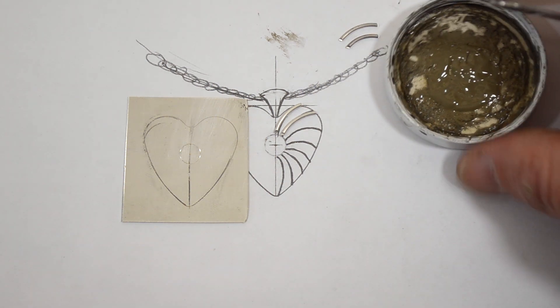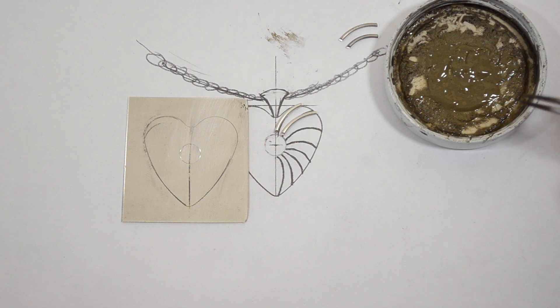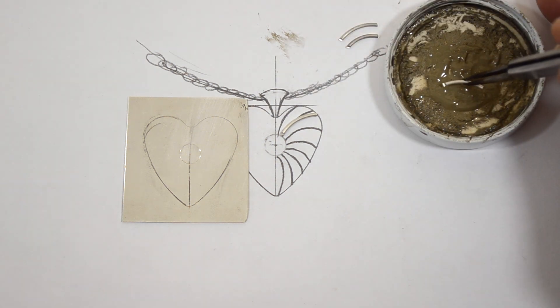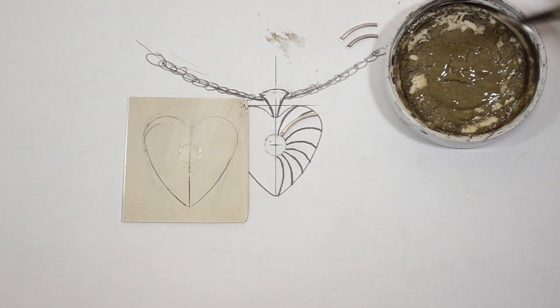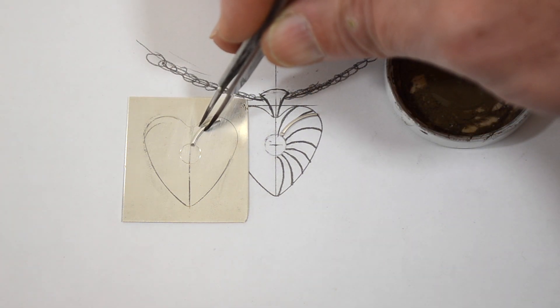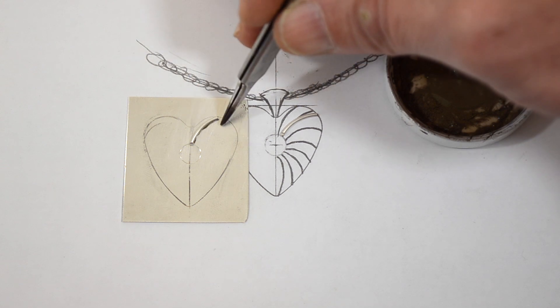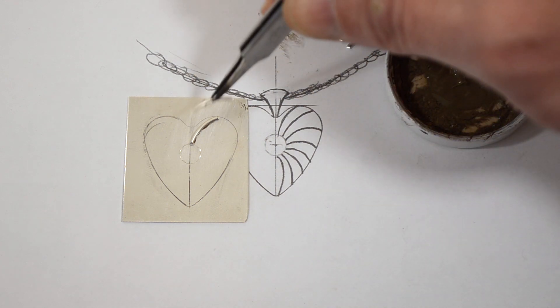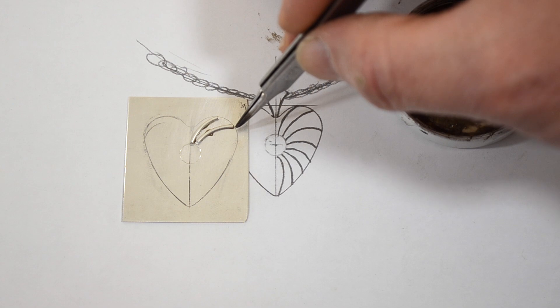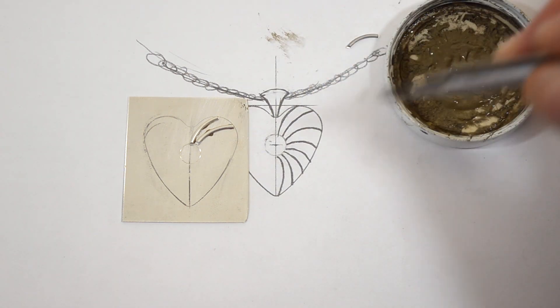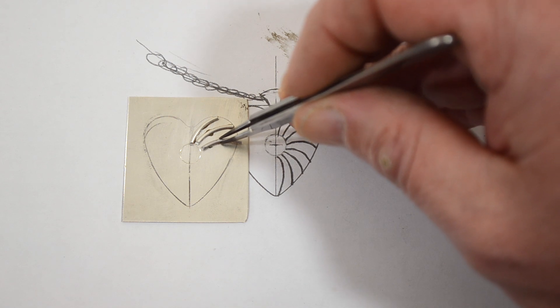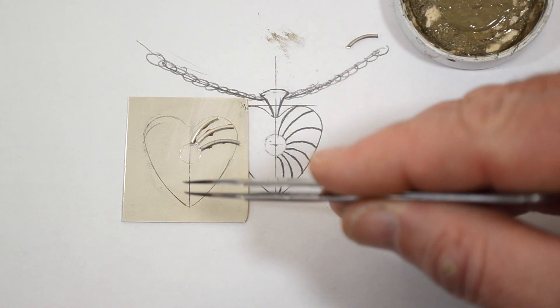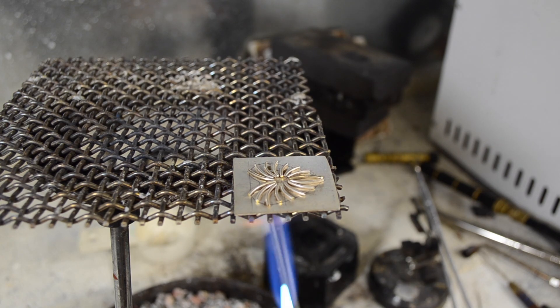Now this is one operation that I like to use paste solder for. I don't use paste solder for full fabrication but for things like this it does make it easier because you can lay your wires in place and the paste solder will help them stay where they're supposed to be. I'm just using the drawing as a reference as to how far apart I want to keep my wires, and then I'm going to work all the way around, lay all the wires into place and then solder.